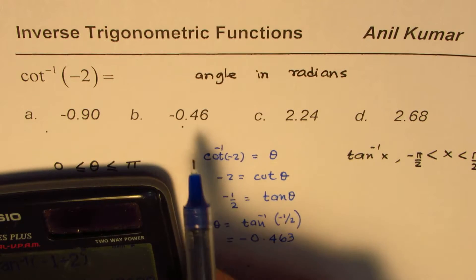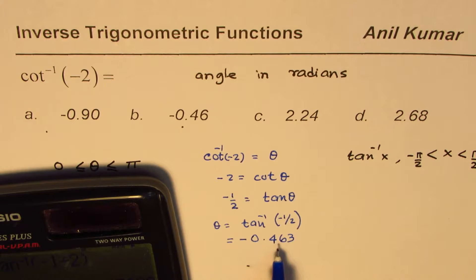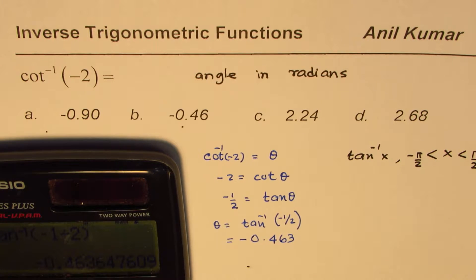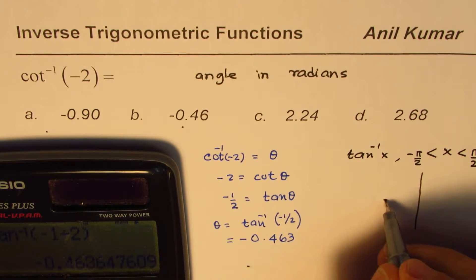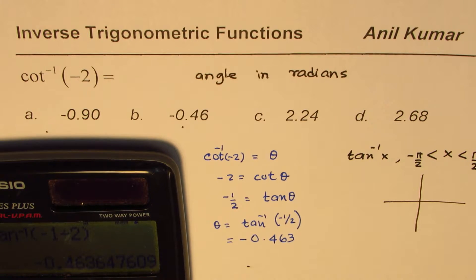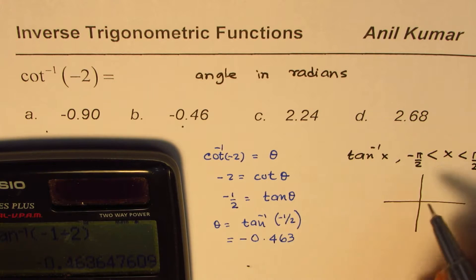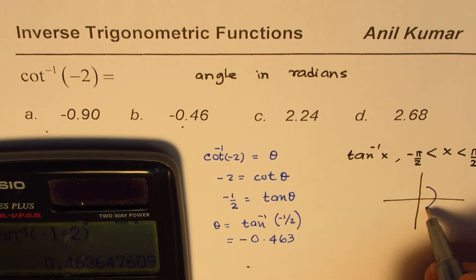We get an angle which is minus 0.463. Do you see that? Now that is one of the options. So at times you may take that as the correct answer, which will be absolutely wrong. Now as I said, if you are using tan, you have to be careful.